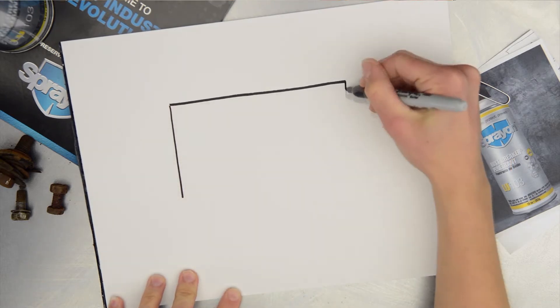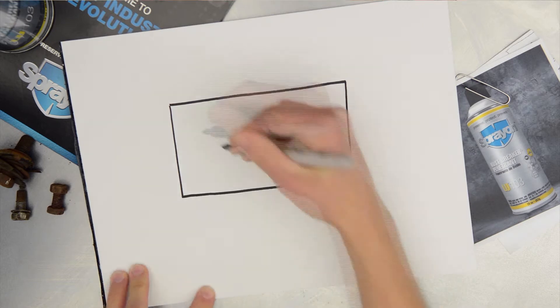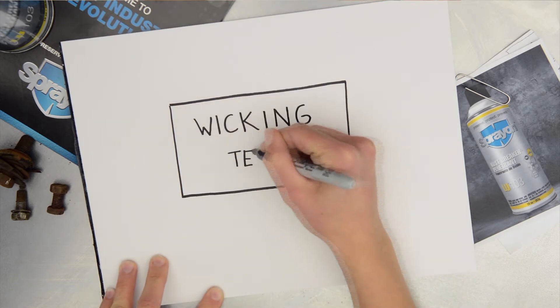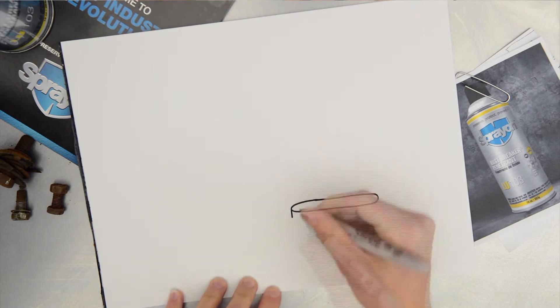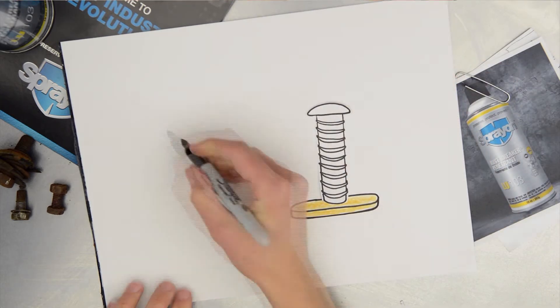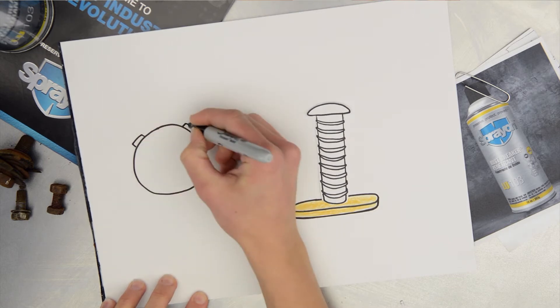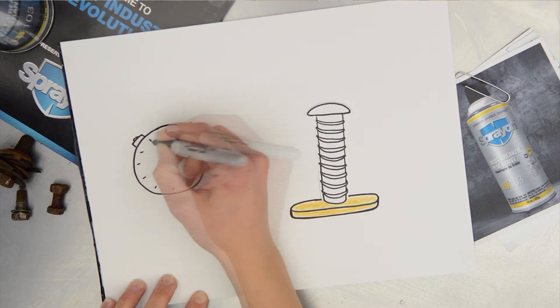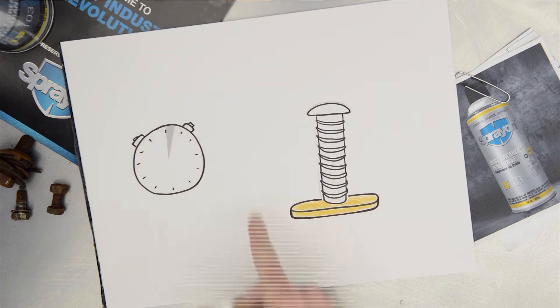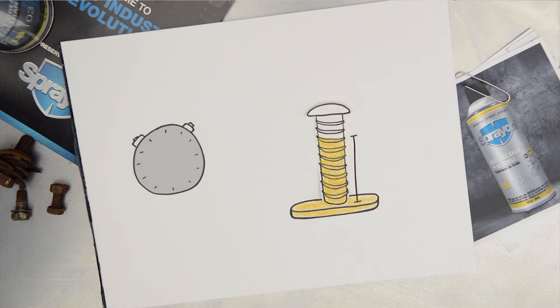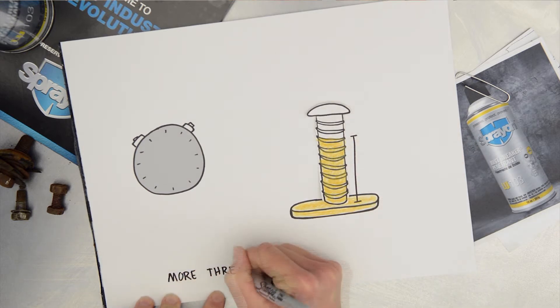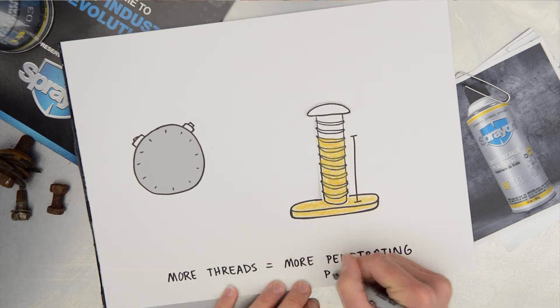The test that is typically used to determine the penetrating power of a lubricant is known as the wicking test. In this test, the threaded end of the bolt is balanced vertically in a small pool of penetrant for two minutes. Depending on the surface tension and capillary action, the lubricant will begin to climb the threads of the bolt. After two minutes, the number of threads the lubricant has climbed is counted. The more threads the lubricant climbed, the more penetrating power it is said to have.